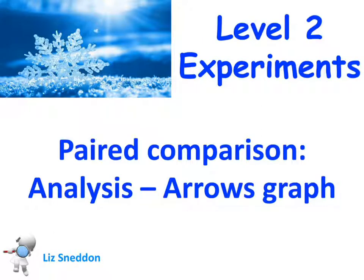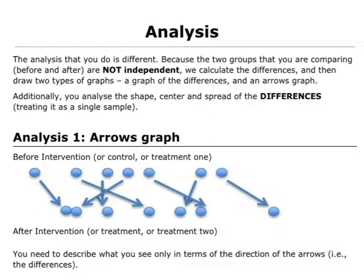Let's have a look at a paired comparison analysis, and we're going to look particularly at what the arrows graph is all about. Because we've got two groups — two sets of data — but both of those sets of data have been collected on the same person. That means we don't have independent groups, so we need to find and look at the differences, not the original data anymore. When we draw an arrows graph — and there is a video showing you how to create this arrow graph in NZGrapher — we want to look at the difference.